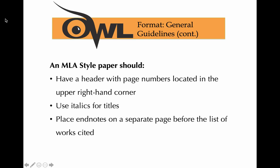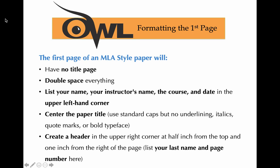We use italics for most titles and place endnotes on a separate page before the works cited. With APA you would have a title page; with MLA we don't have one. Everything is double spaced. Your heading goes in the left-hand corner where the cursor is blinking when you open the document — that's where you put your name, your instructor's name, the course, and the date. In my templates I tend to ask for your name, the course, my name, and then the date.